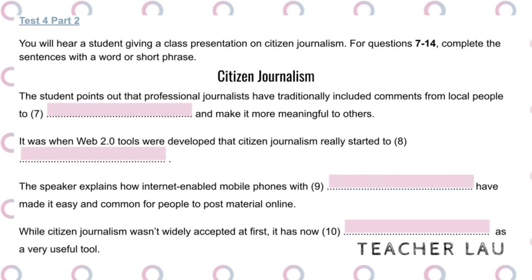Citizen journalism began to fully emerge with the development of what we call Web 2.0, which is when it became possible for members of the general public to create and share their own content on the World Wide Web. Since most people now have mobile phones with internet access, as well as built-in cameras, the process of uploading comments or photos to the internet has become widespread. So once individuals and groups had a vehicle for posting reports of their own version of events, citizen journalism grew rapidly.